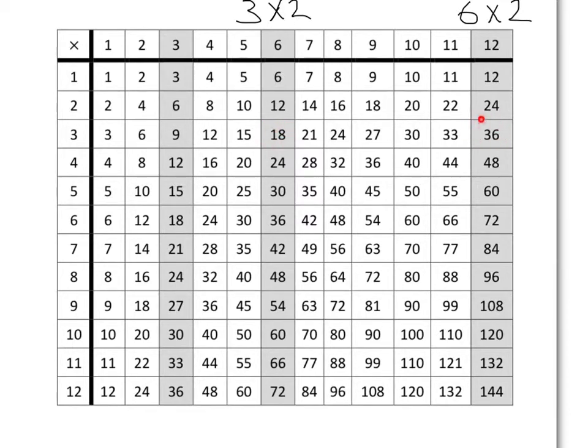And again double of 18, in other words 18 times 2, 18 plus 18 which is 36 here.